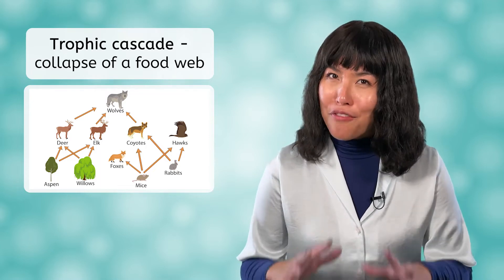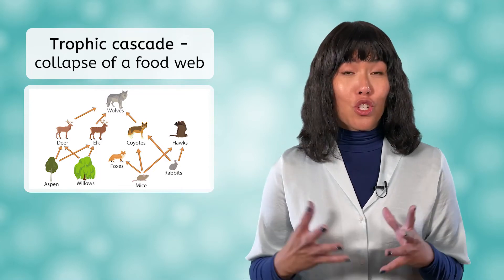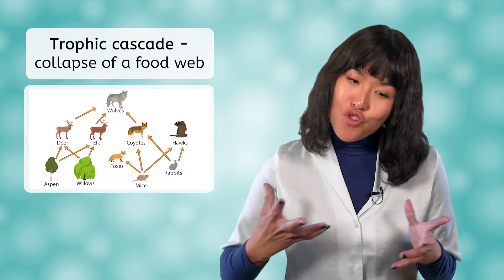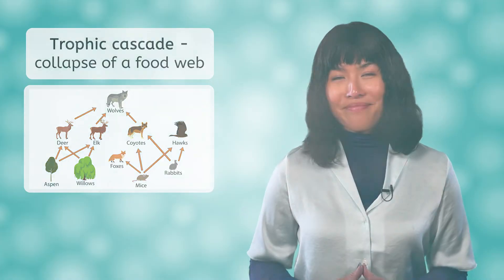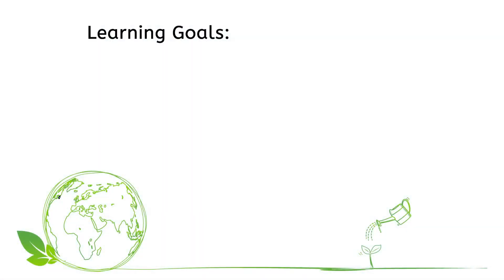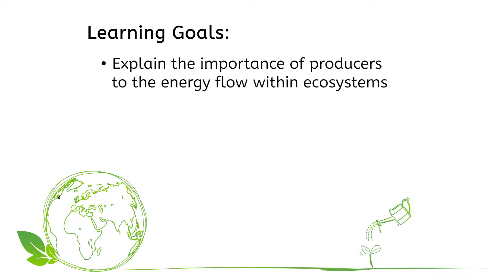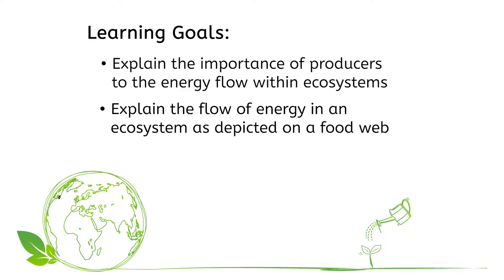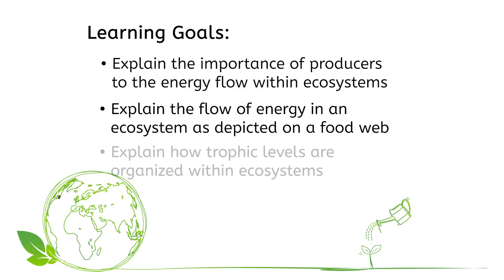Today we'll take a closer look at food webs and how they show the transfer of energy through an ecosystem. But before we get started, let's take a look at our goals for this lesson. By the end, you'll be able to explain the importance of producers to the energy flow within ecosystems, explain the flow of energy in an ecosystem as depicted on a food web, and explain how trophic levels are organized within ecosystems.